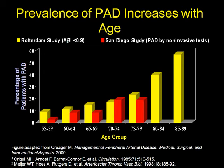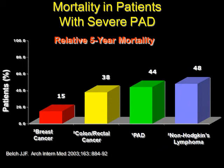The prevalence of PAD increases with age. As the population gets older, the prevalence keeps increasing significantly, especially in patients who are 80 and above. Do all these patients need surgical treatment? Not necessarily. Do they need medical treatment? Yes — all these patients need to be treated medically to keep them healthy. Medical management is the key. The relative five-year mortality is significantly higher at 44%, and patients with bilateral above-knee amputation due to peripheral vascular disease have a five-year survival rate of only 20 to 25%.